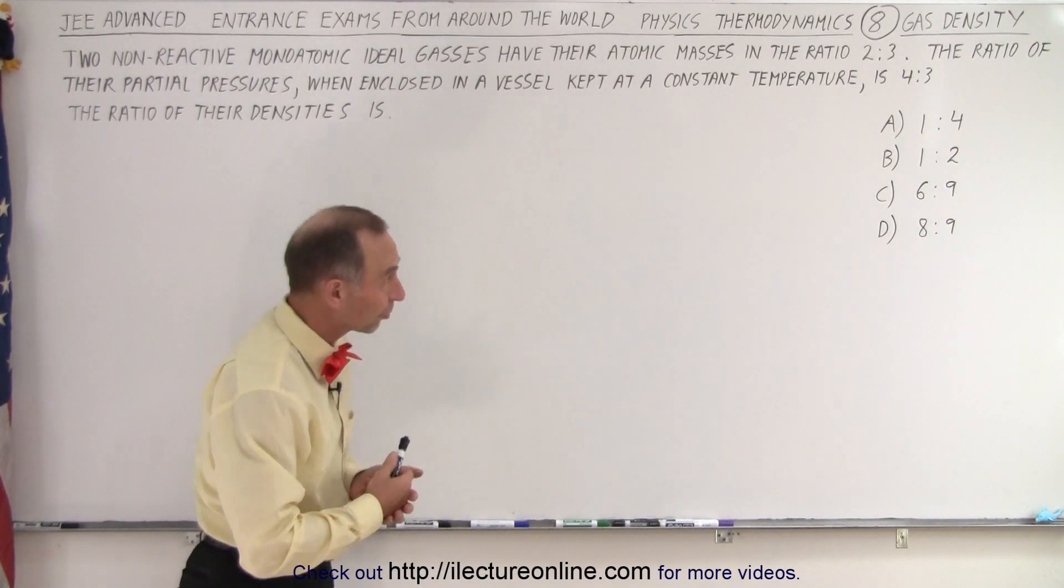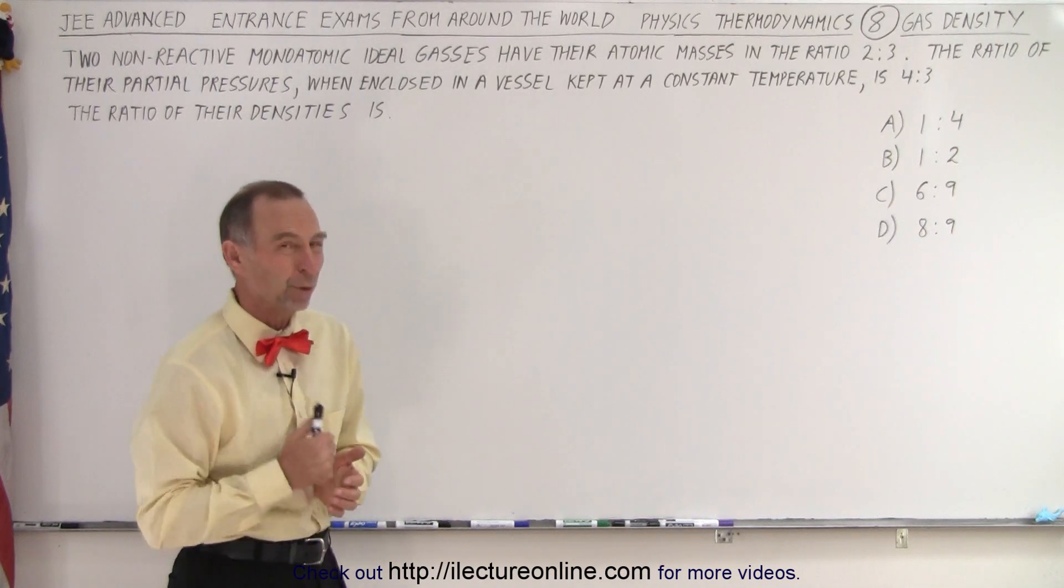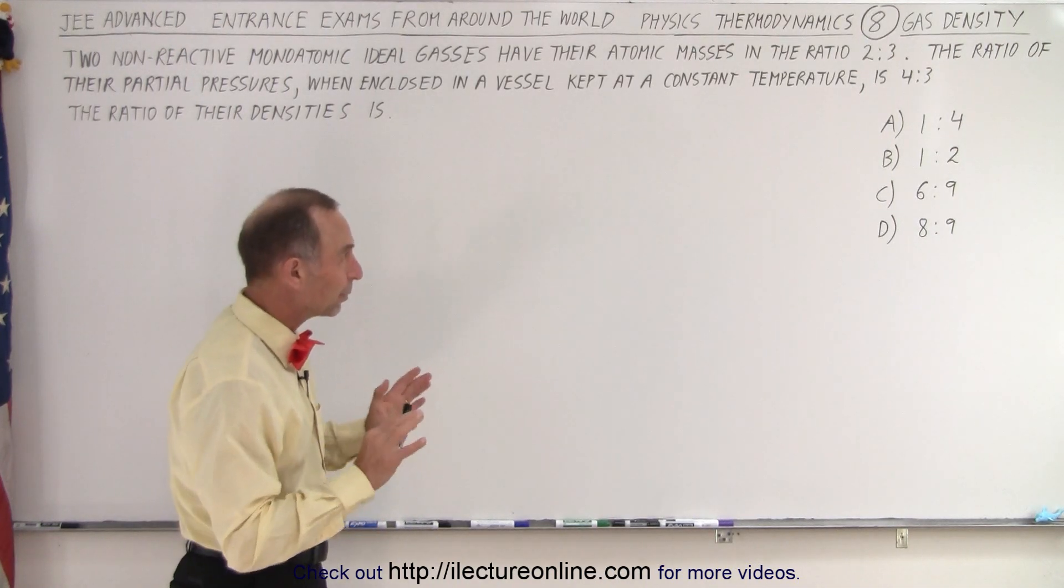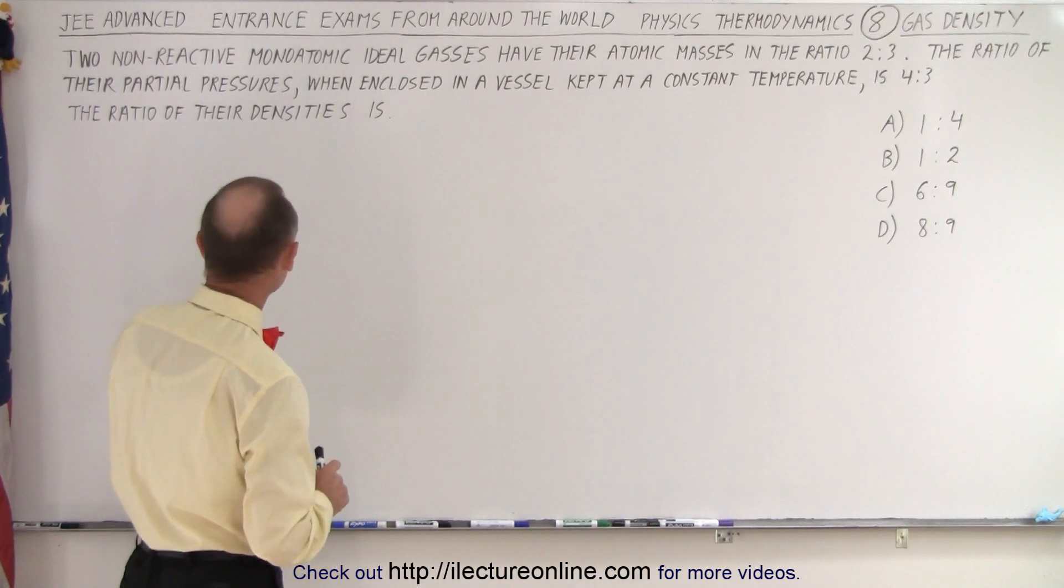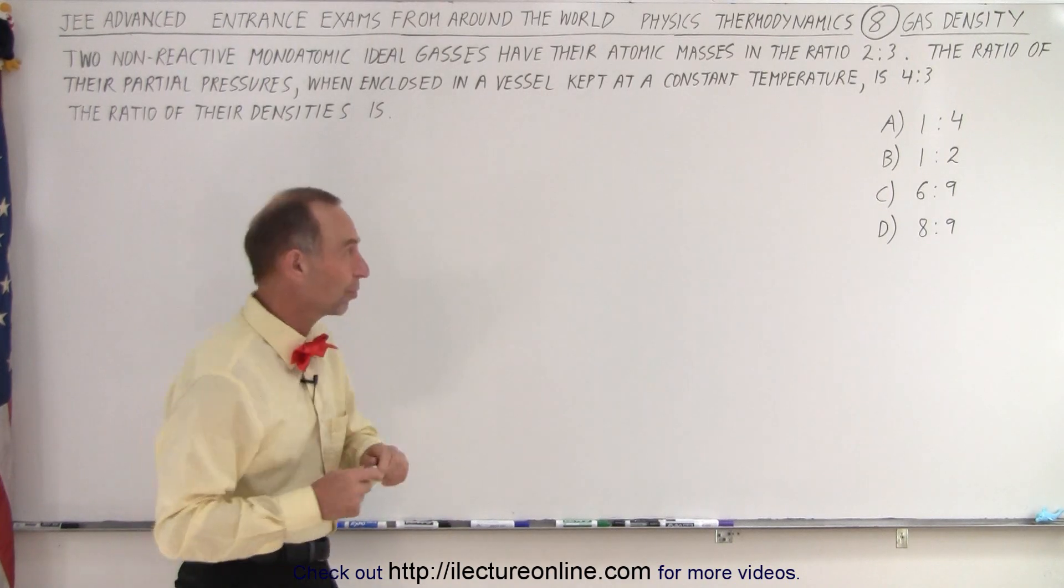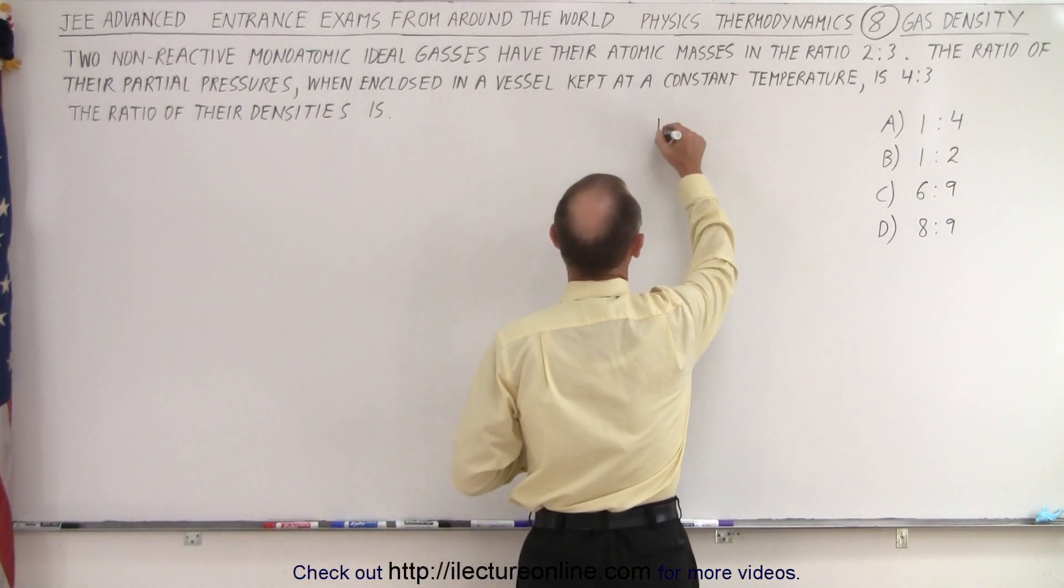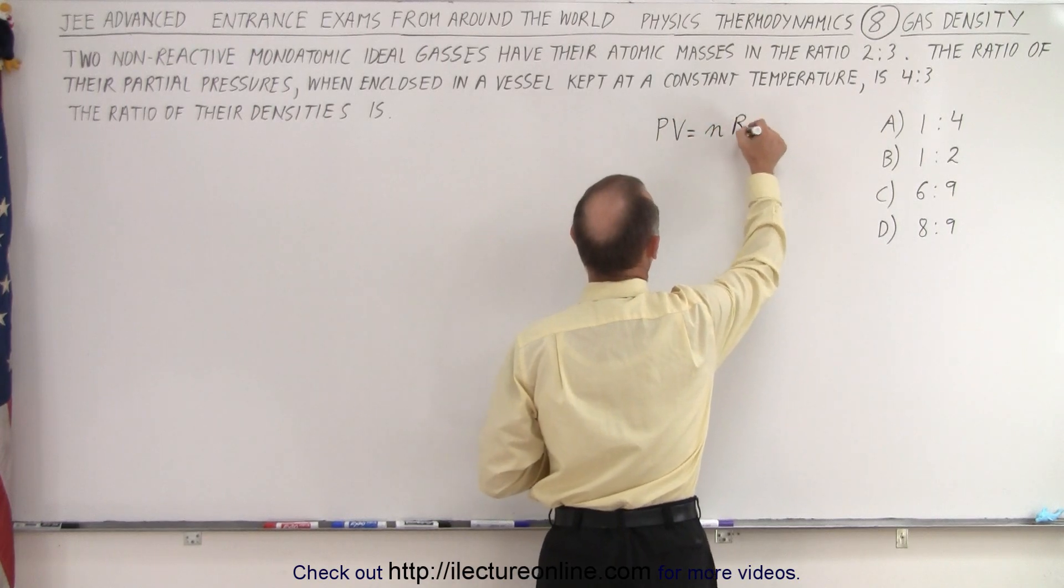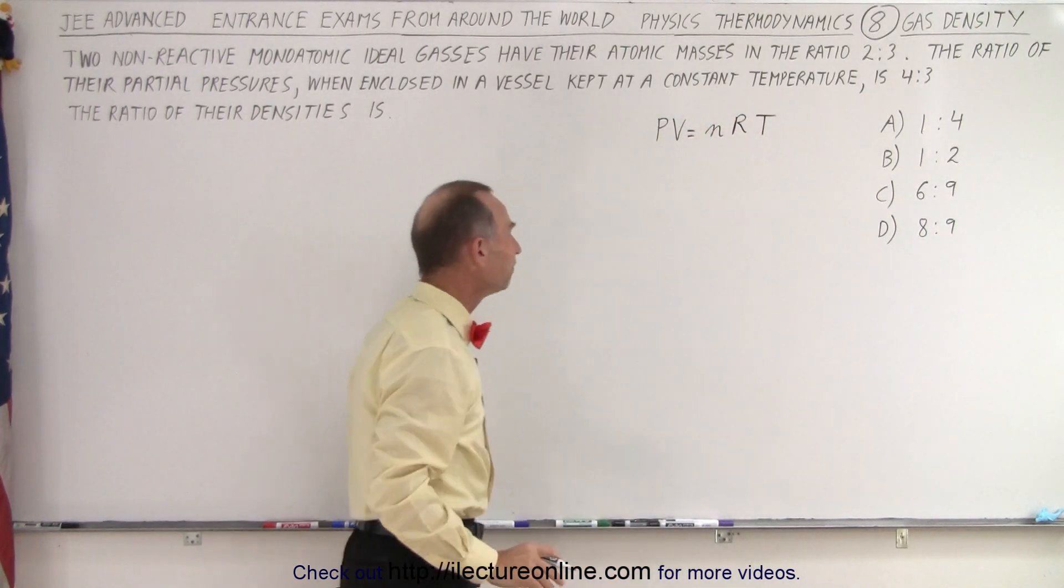All right, we have four choices. Which one is it? So how do we deal with that? Well, first of all, we're dealing with ideal gases. So the ideal gas equation is PV equals nRT. We're going to need that one.